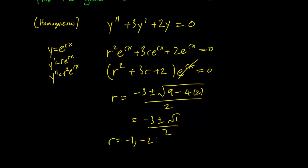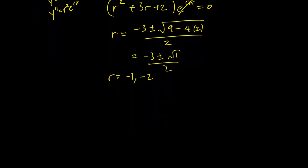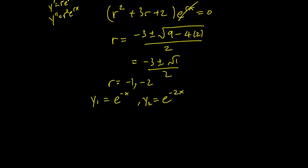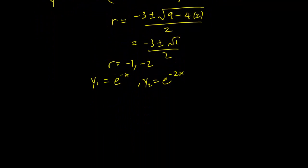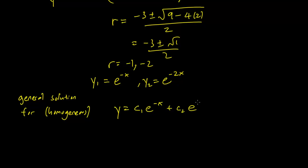Okay, and this means that our two solutions for y are y₁ equals e^(-x), y₂ equals e^(-2x). And we can then figure out that the general solution for homogeneous is going to be y equals c₁·e^(-x) plus c₂·e^(-2x).